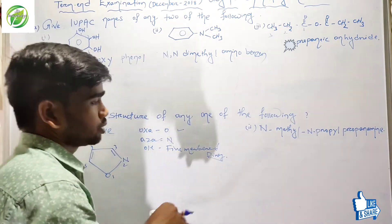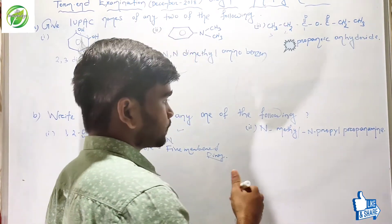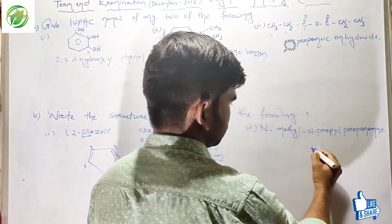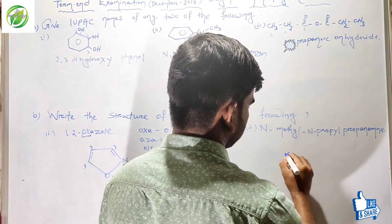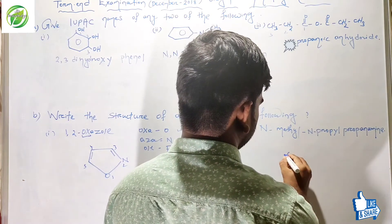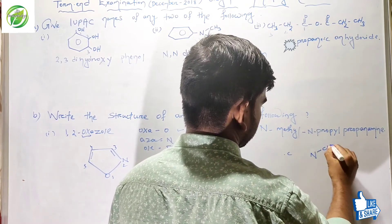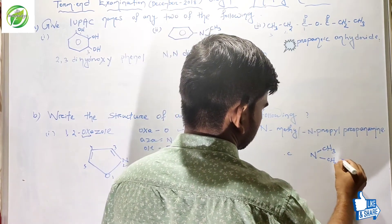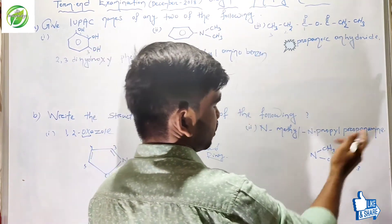The next one is N-methyl, N-propyl propanamine. You can see N-methyl and N-propyl substituents on the nitrogen. The parent chain is propanamine, with N-methyl and N-propyl groups attached.